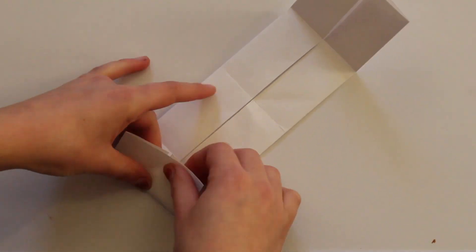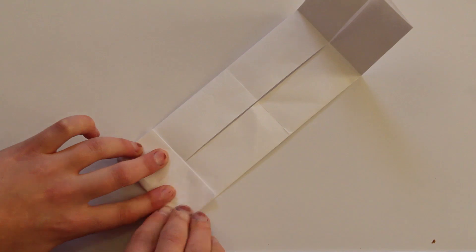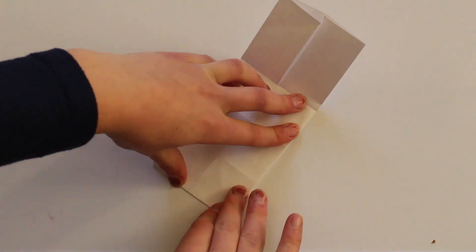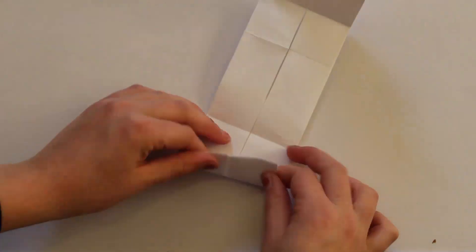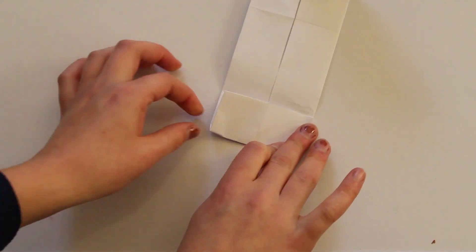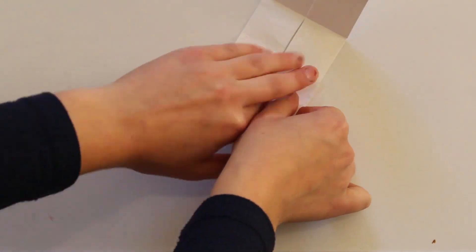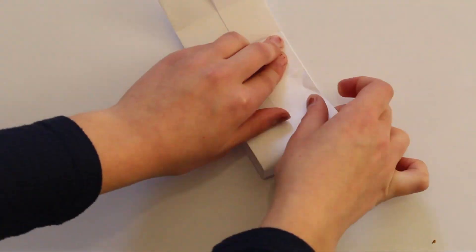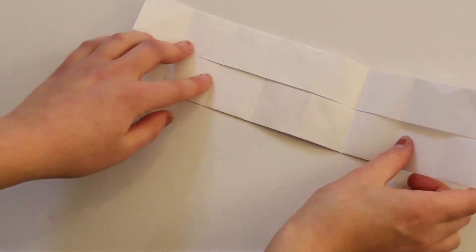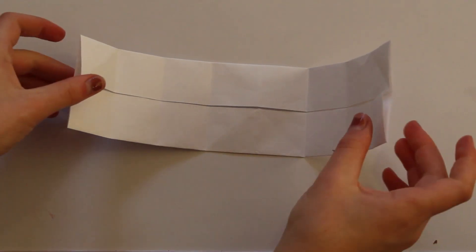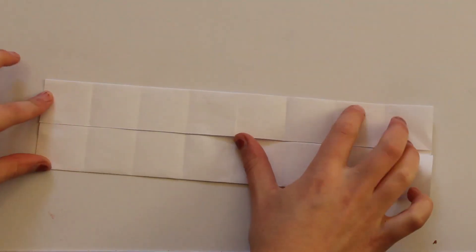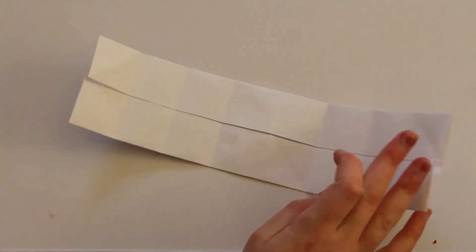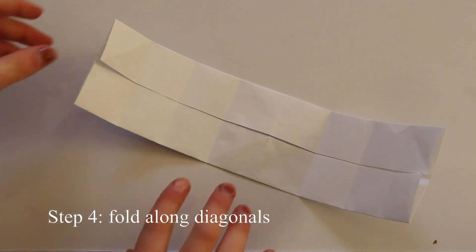And if you've been following the proportions, then each eighth will actually also have proportions one by two, or it will be made up of two little squares. Okay, now since we have all of these squares, we're going to fold along the diagonal of each square.